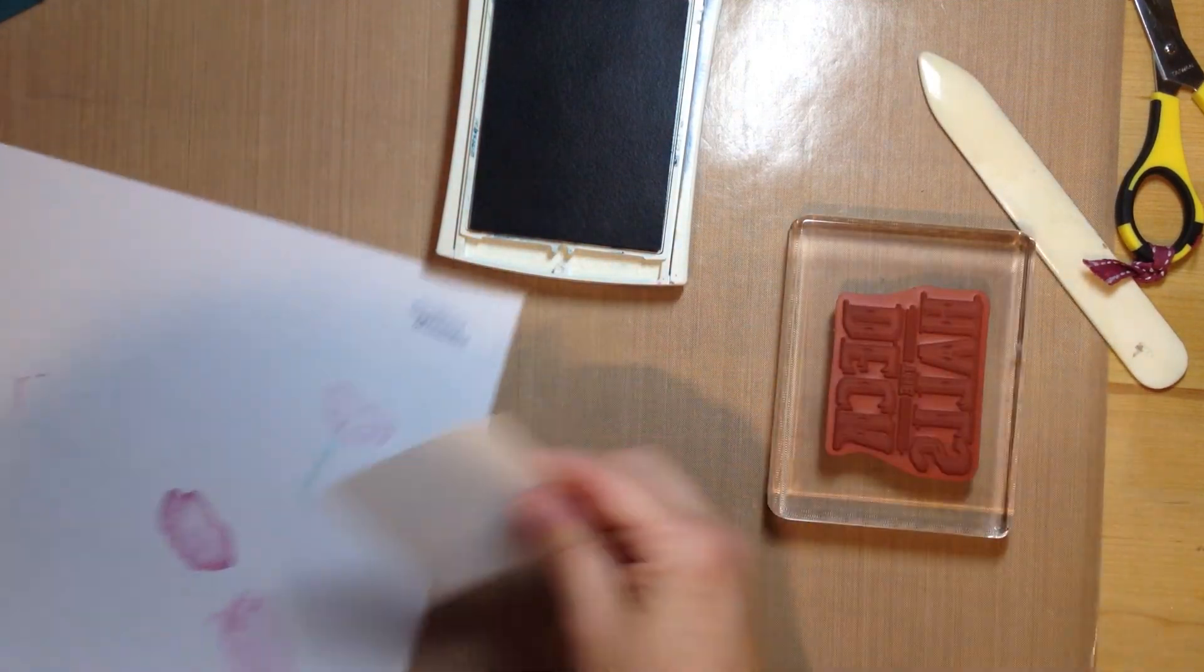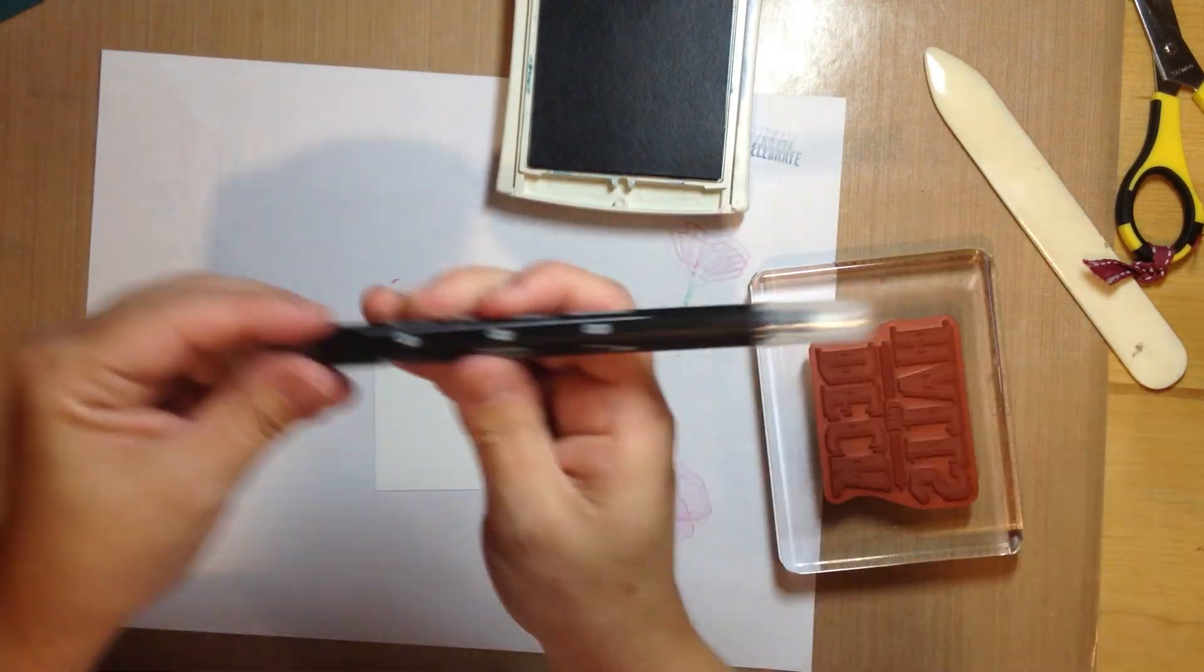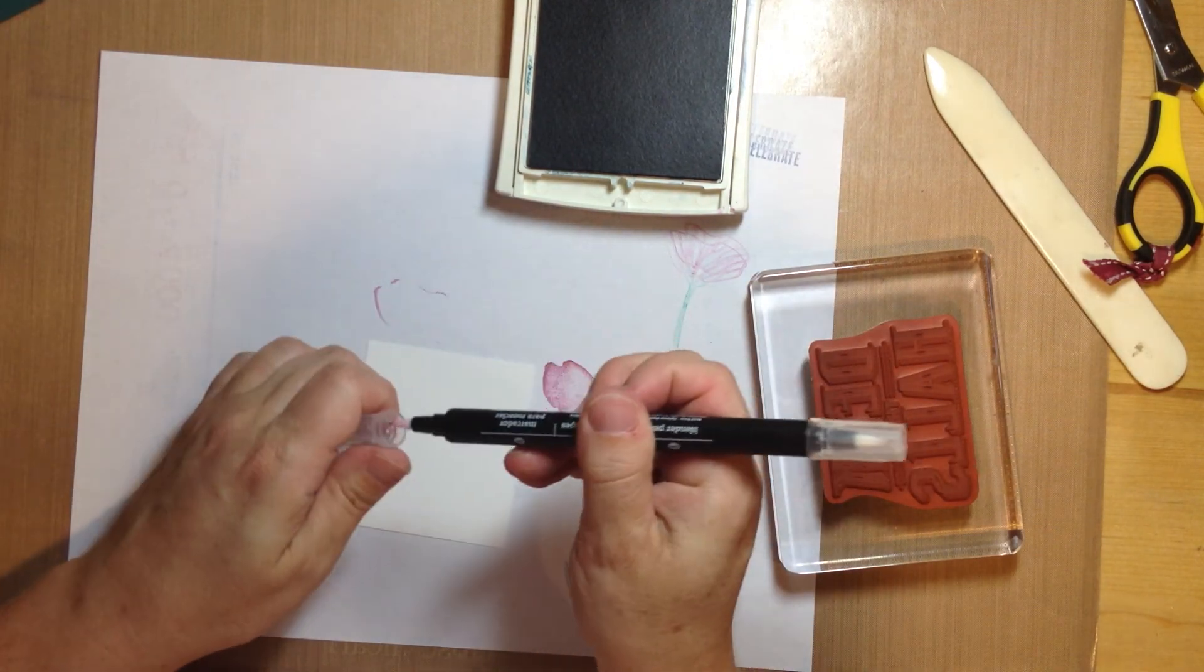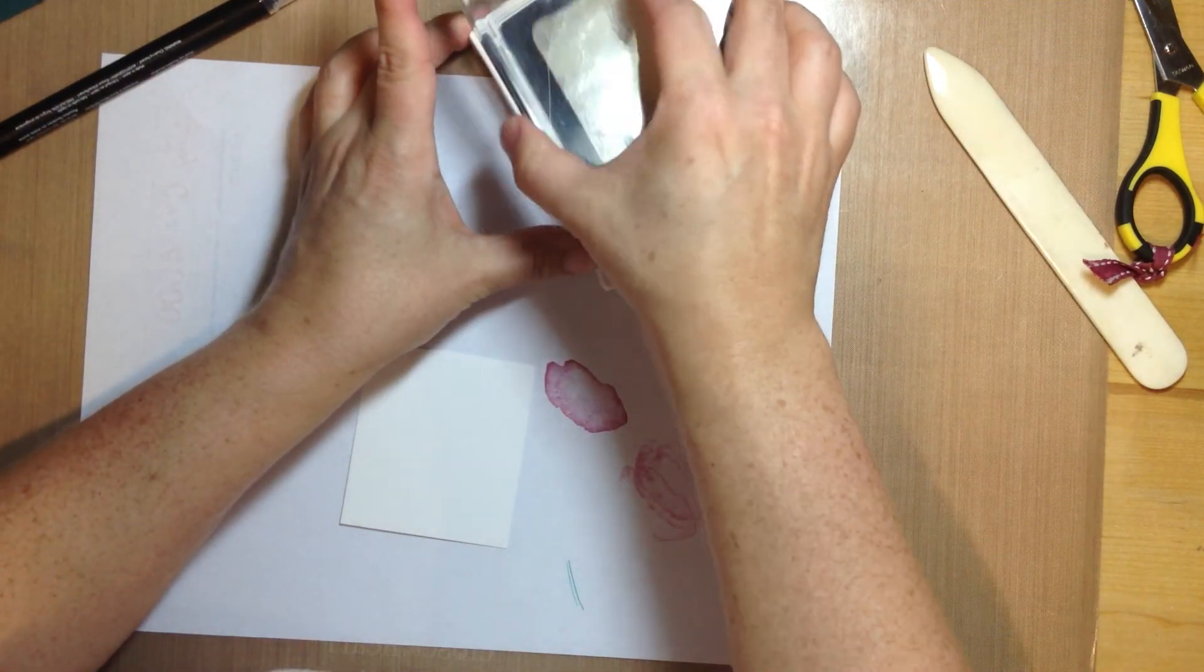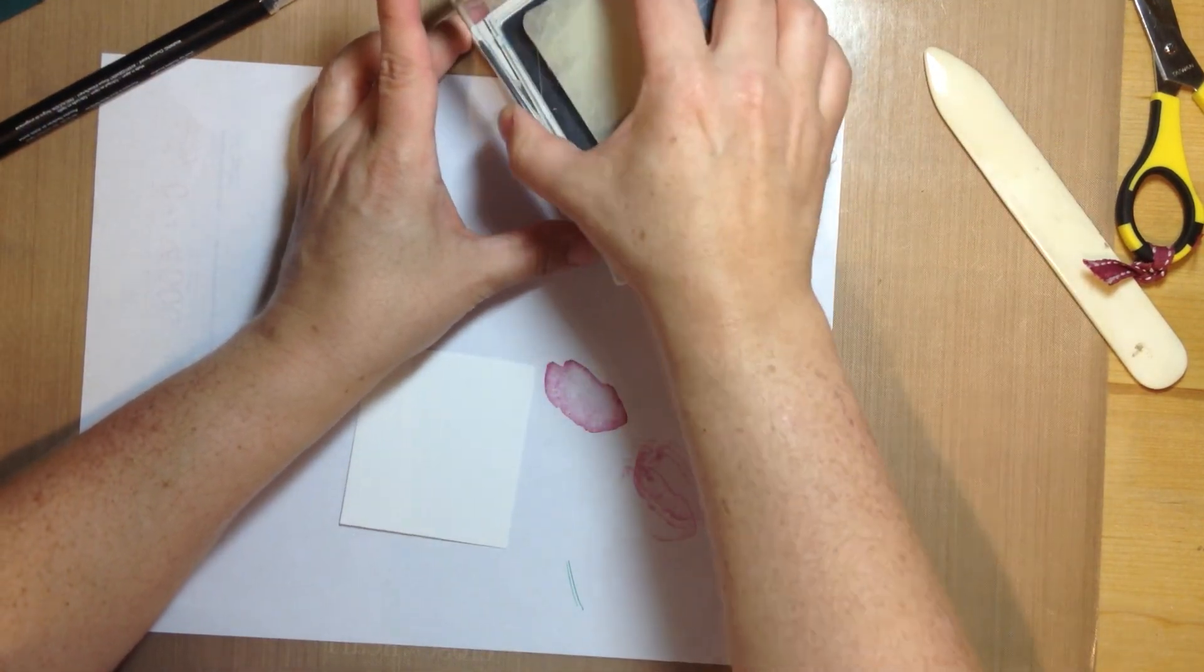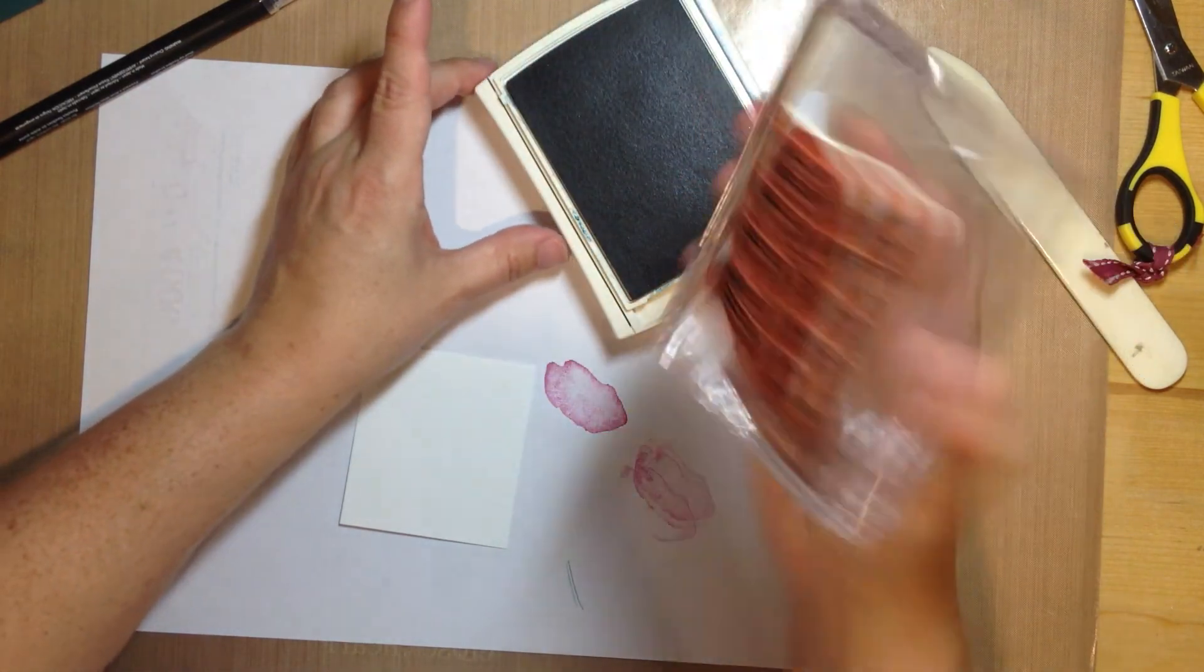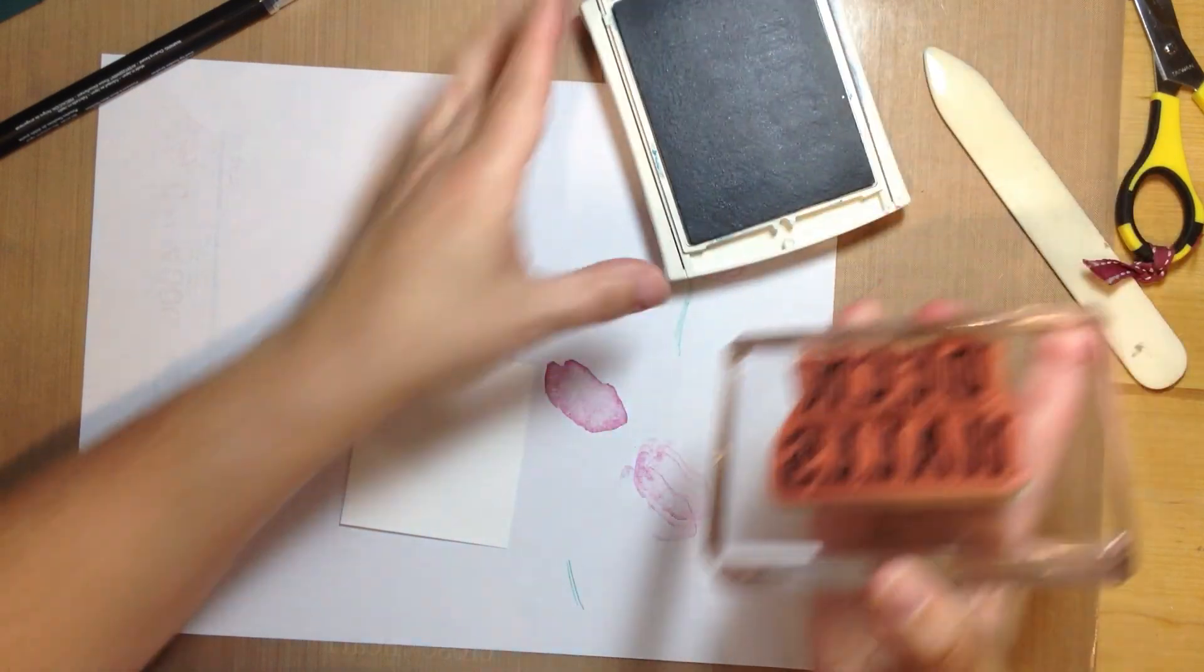So what I like to do is I'm just going to get some scrap paper in here. And I've got a blender pen. And what I want to do is I want to make sure my blender pen is clean so there's no ink on it. Or no remaining color from the last color that I used. And I'm going to ink it. This is the Deck the Halls image. I'm going to ink it in Island Indigo. That looks pretty good.